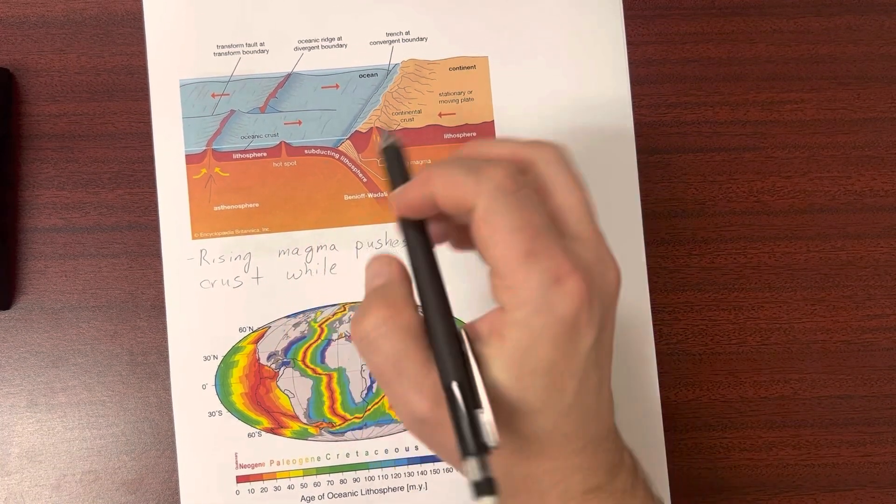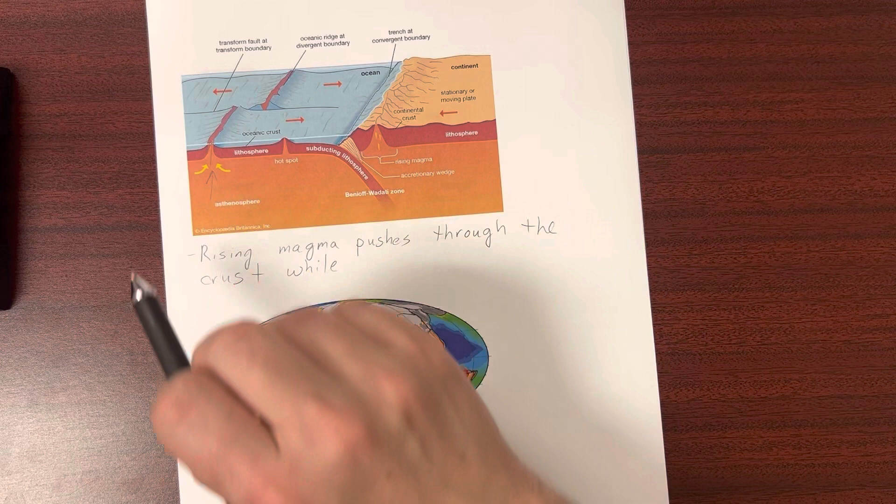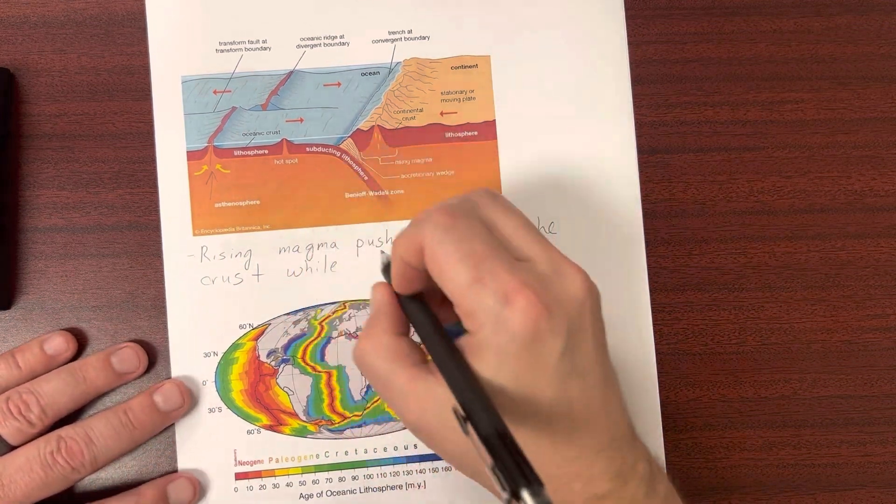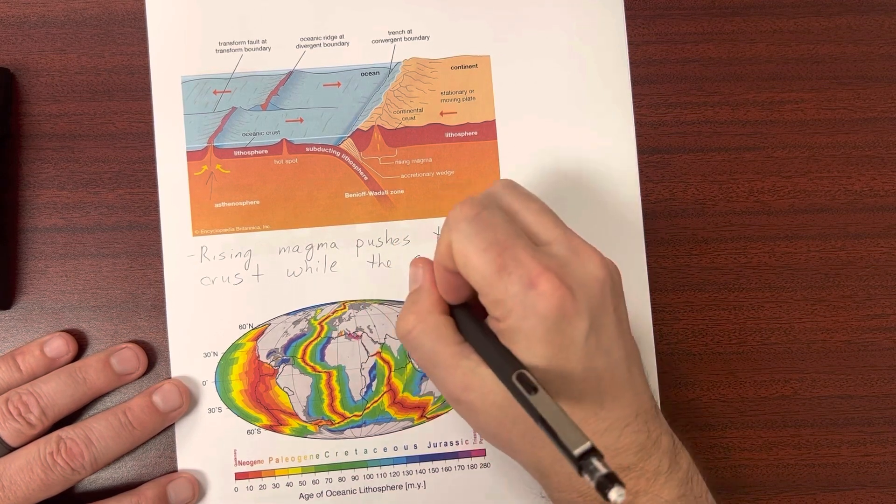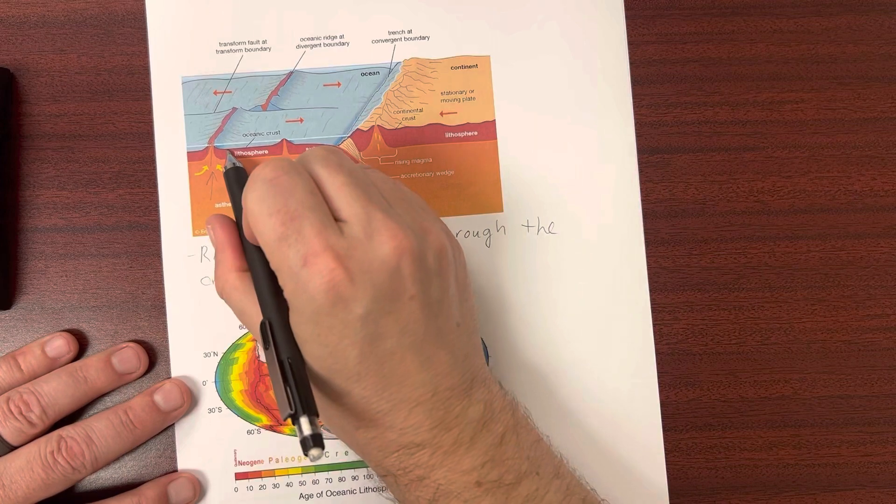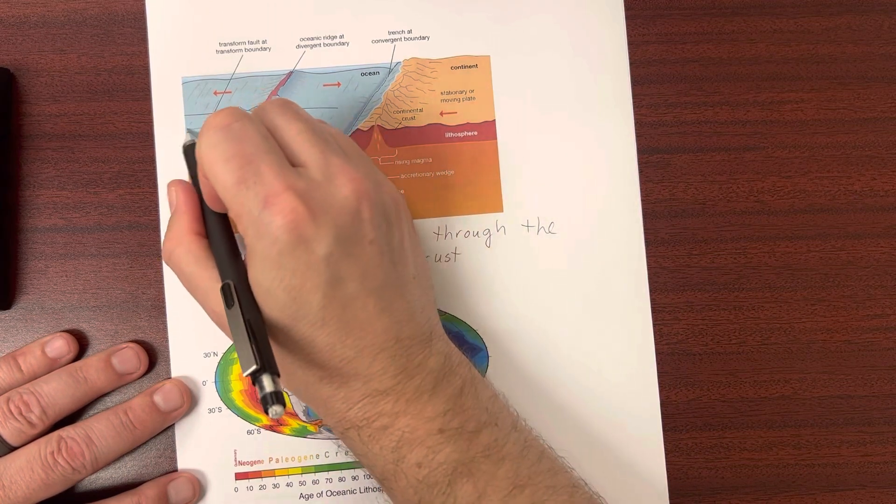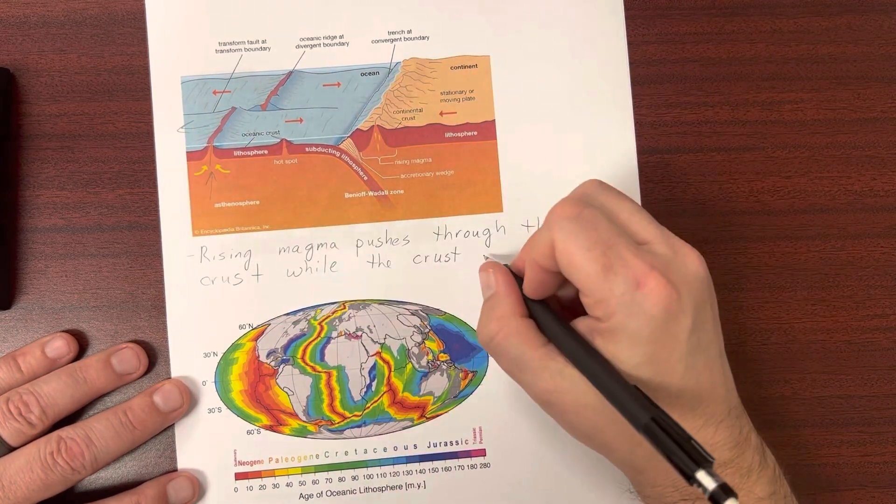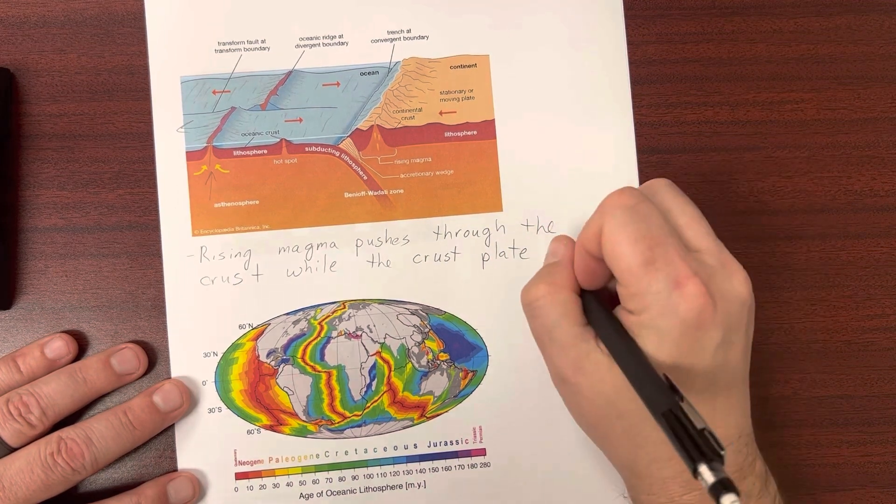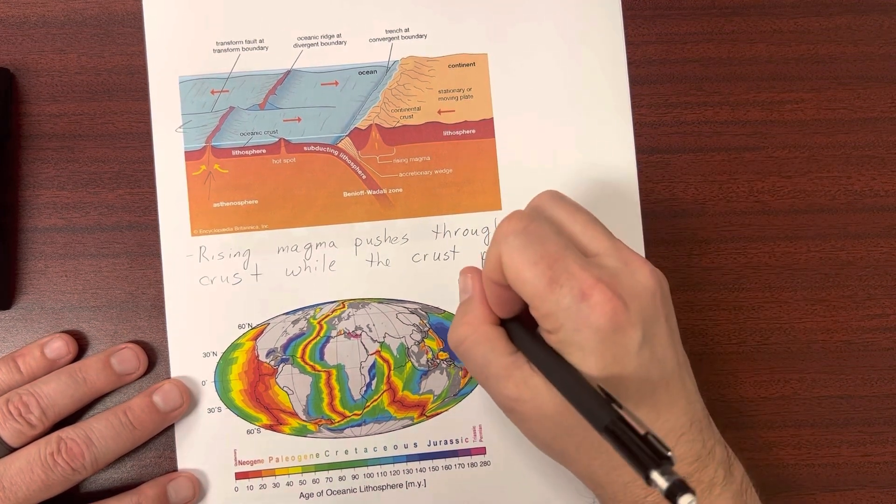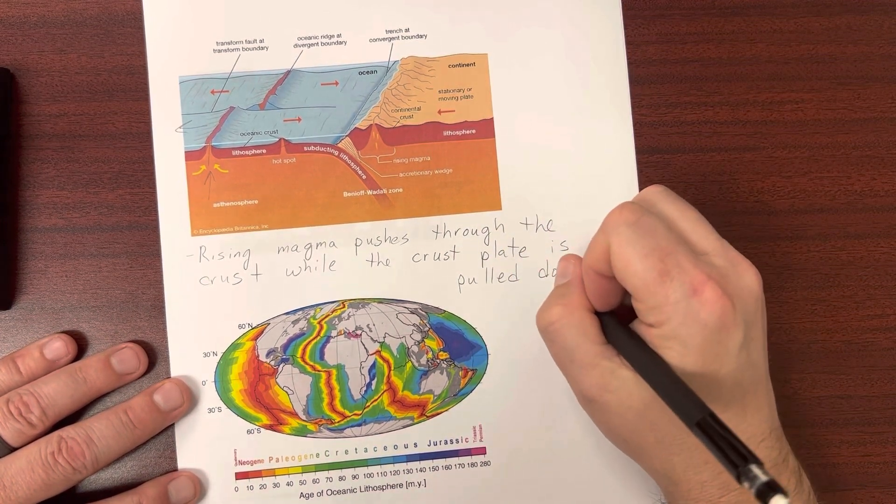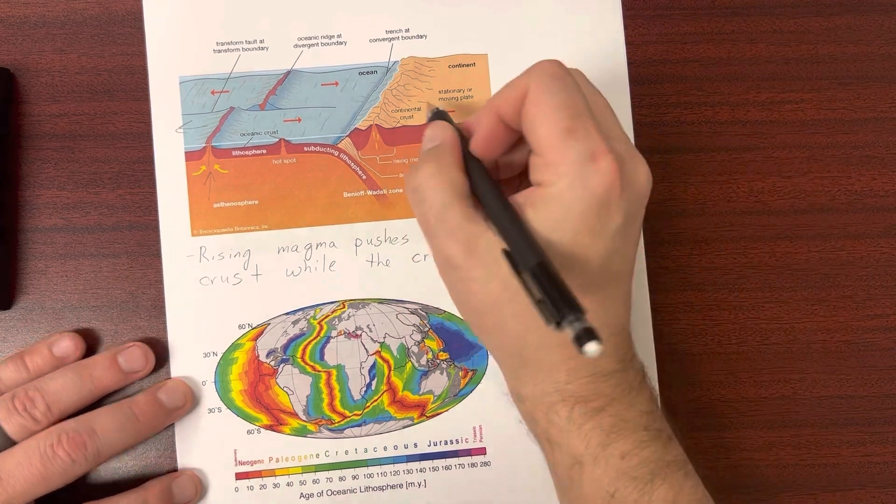Now, at the same time of the magma coming up, we also get something else going on, and that is the plate. The plate on either side of this ridge, going either this way or this way, is being pulled down into the earth. And it's literally just being pulled by gravity, because it has a different density than this other plate.